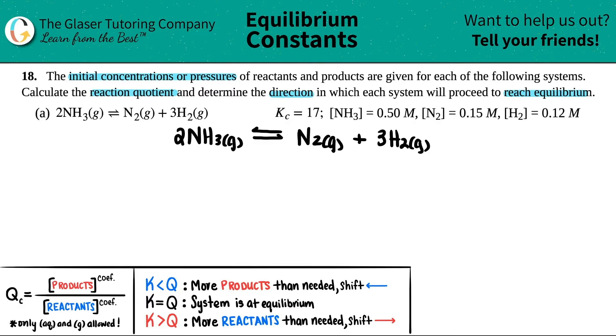The next thing is I like to keep everything organized. So they gave me concentration values. Concentrations are molarities. So I'm just going to write down what I got. They told me I had 0.5 for NH₃, so I'm going to say I got 0.50 molarity here. And then for N₂, they told me I had 0.15 molarity. And then for H₂, I got 0.12 molarity.